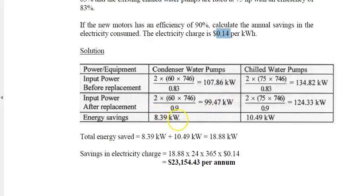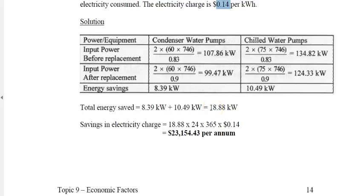That gives the real power consumed. The input power after replacement drops to 99.47 kilowatt. The saving in kilowatt is 8.39 kilowatt for condensing water pumps. For chilled water pumps, the saving is 10.49 kilowatt. The total energy saved is 18.88 kilowatt. Saving in electricity charges is 18.88 kilowatt times 24 hours times 365 days times 14 cents. The total savings achieved annually would be as much as $23,154.43. This is a straightforward example of replacement of old and new equipment.